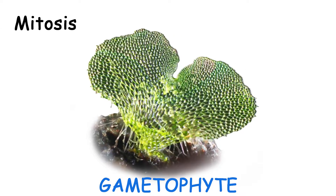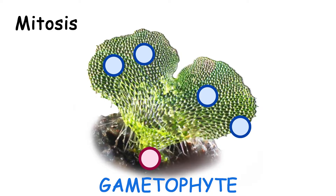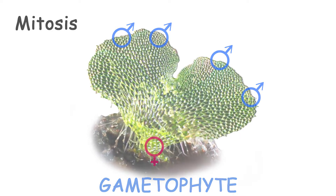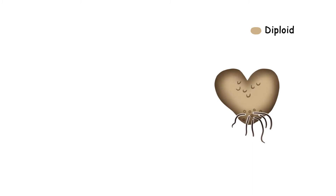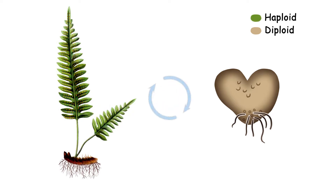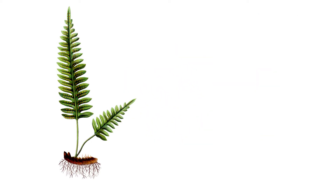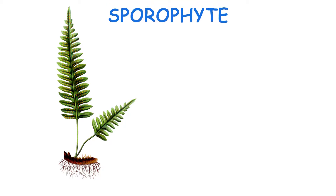The cells in the gametophyte, or the haploid generation, contain one copy of the chromosomes in the cells. Through mitosis, more haploid sex cells are produced in the gamete-producing organ in the gametophyte. The diploid generation has a full pair of chromosomes and in algae and plants looks completely different than the haploid generation. After fertilisation of the haploid gametes, the new diploid cell produces the sporophyte.